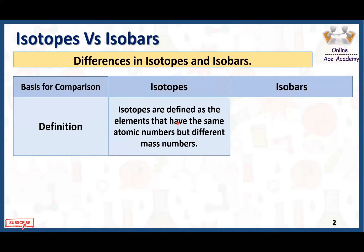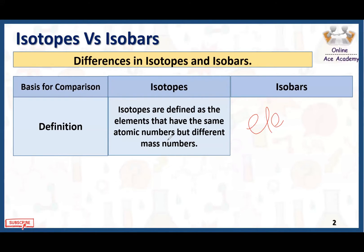What are isotopes? Isotopes are defined as elements that have the same atomic number but different mass number. As we know, all elements have atoms in them, and normally all atoms have the same mass number and same atomic number. Isotopes are the ones that show an exception.